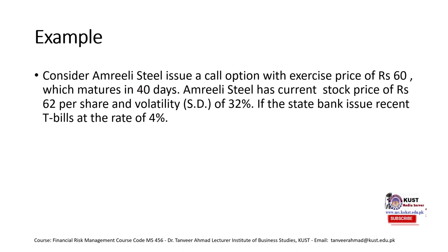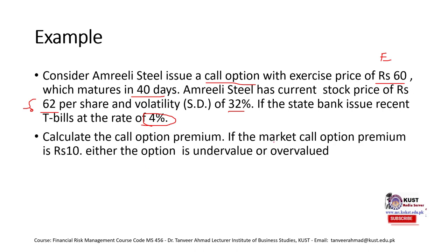The example: consider Amrilli Steel Limited (ASTL), a firm in the steel sector of Pakistan. It issues a call option with an exercise price of 60 rupees which matures in 40 days. So capital E is 60, T is 40 by 360 because it is given in days. Amrilli Steel has a current stock price of 62 per share — this is S-naught — and the volatility, written as standard deviation, is 32 percent. The State Bank T-bill rate, which is our risk-free rate, is 4 percent. We need to calculate the call option premium; the market call option premium is rupees 10, so we must determine whether the option is overvalued or undervalued. We also need to calculate the value of the put option.